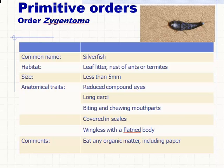First of all, we have the primitive insects — those still on Earth today that represent what insects looked like before the evolution of wings. These insects are wingless and therefore are Apterygota. They show little change during metamorphosis, so their young resemble the adults. Unlike the winged Exopterygotes and Endopterygotes, these sometimes molt after reaching sexual maturity, whereas the winged insects molt as they progress through their instars during the juvenile phase. So we'll look at a couple of primitive insects to start.